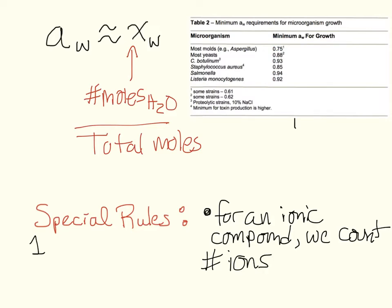So for example, if you have one mole of sodium chloride, for our purposes here, that counts as two moles of ions. Because when you mix with water, you have one mole of sodium and one mole of chloride. Okay? That's the main special rule we're going to keep in mind.